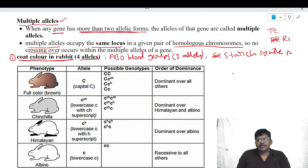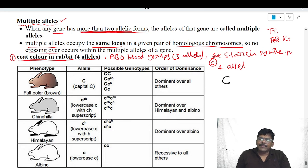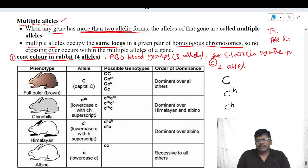If you observe the rabbit, the gene which maintains coat color contains four alleles. If the gene is C, it contains four alleles. The four alleles responsible for the maintenance of coat color, which belong to a single gene, are: capital C, small c^h (one allele), small c^H (one allele), and small c — making four alleles in total.